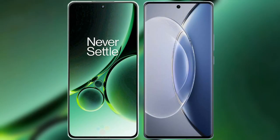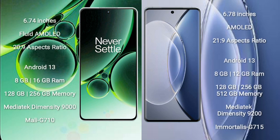I will compare the new OnePlus Nord 3 with Vivo X90. OnePlus Nord 3 comes with a 6.74-inch flat AMOLED display and aspect ratio 20:9. Vivo X90 comes with a 6.78-inch AMOLED display and aspect ratio 20:9.